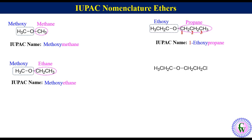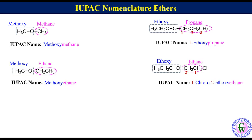Another example: in this molecule both groups attached to the oxygen atom have the same number of carbons. In this case the group with the greater number of substituents is treated as parent chain, so the parent chain will be ethane. The ethoxy group will act as a substituent. Since chloro comes before ethoxy in alphabetical order, the parent chain will be numbered as one and two. So the IUPAC name will be 1-chloro-2-ethoxyethane.